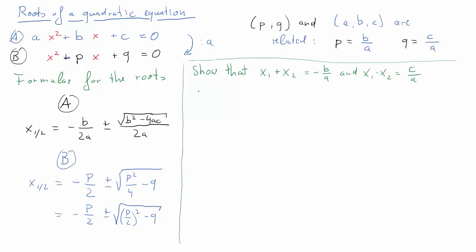So back to the problem. We start by writing out, using formulation A, because that's where b, a, and c occur. We start by writing out the two solutions. So x₁ is negative b over 2a plus this entire second term, and x₂ is negative b over 2a minus that entire second term.